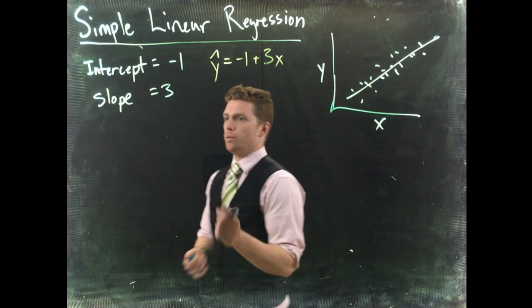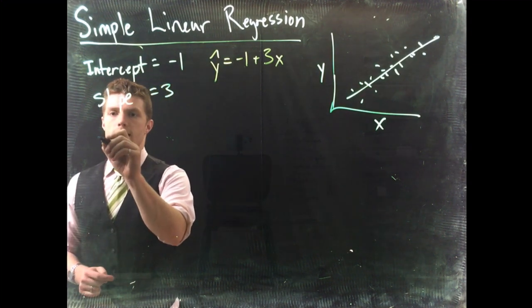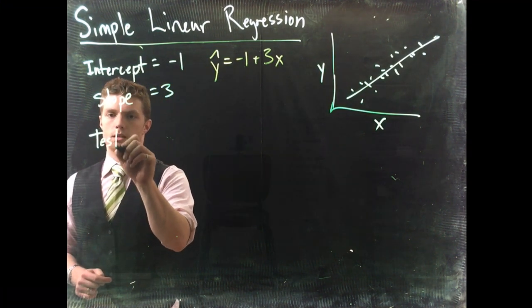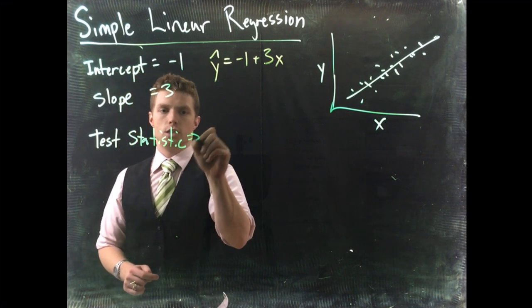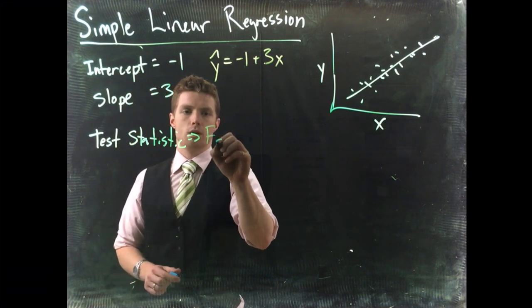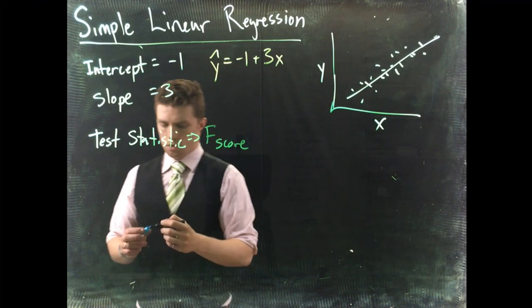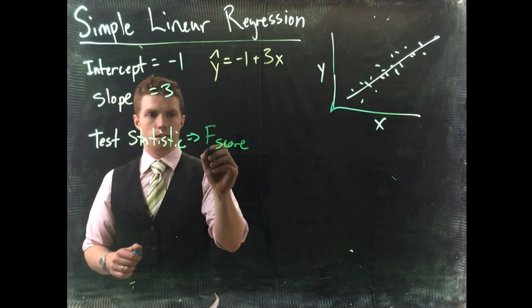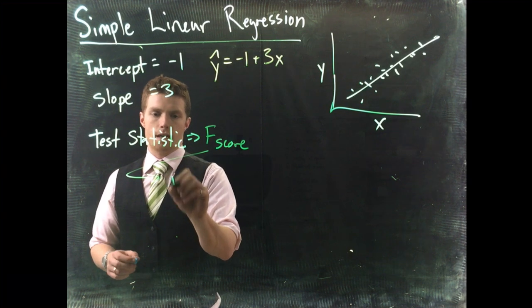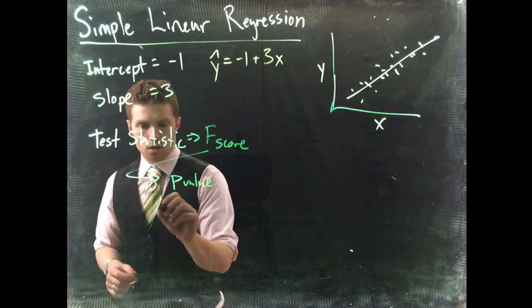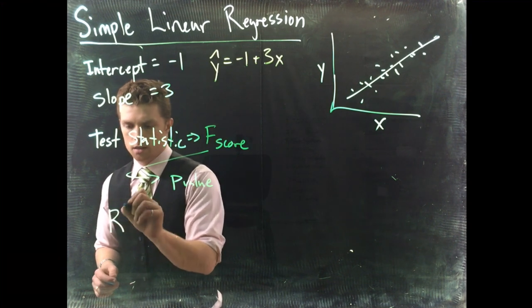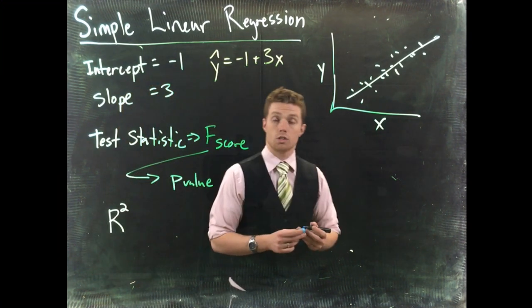And it's also going to give us a few other things. It's going to give us our test statistic, which is going to be a f-score. And then it's going to also give us from this f-score, it's going to give us a p-value. And then it's also going to give us one more thing, this r-squared value. So let's talk about a little bit.